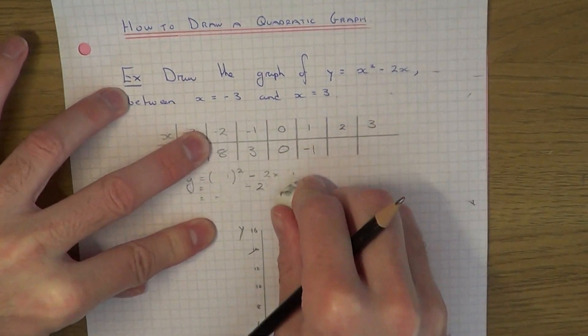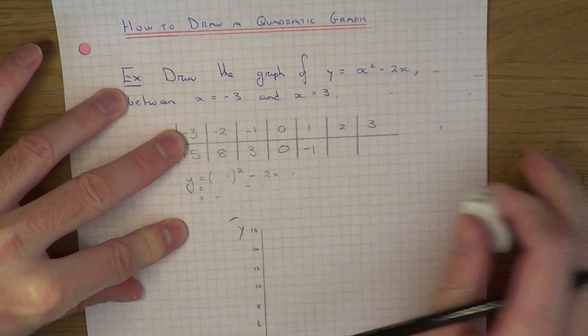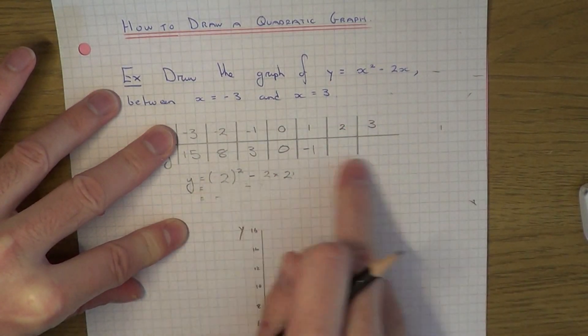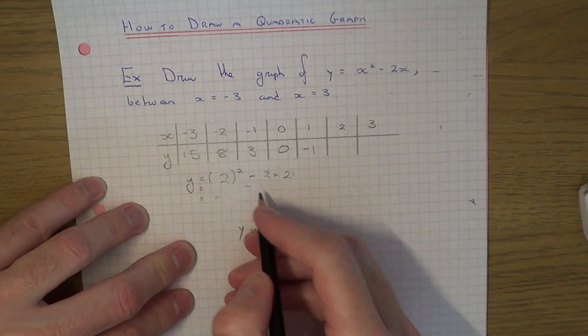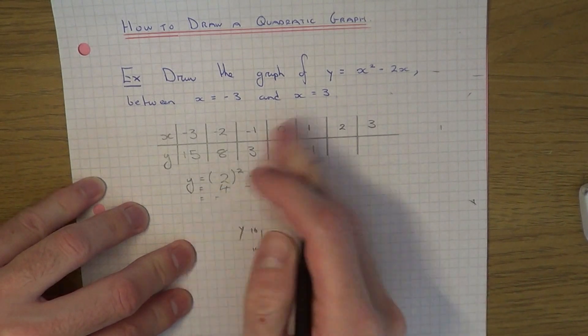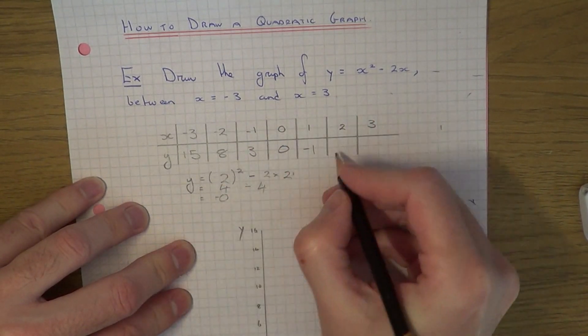We'll have 2 squared minus 2 times 2. 2 squared is 4. Minus 2 times 2 is minus 4. So 4 take 4 is 0.